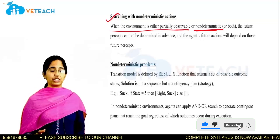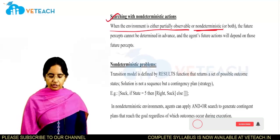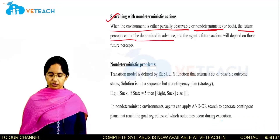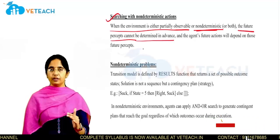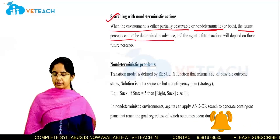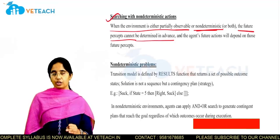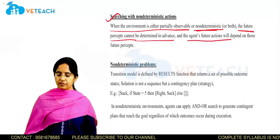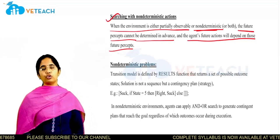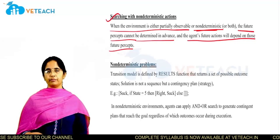Non-deterministic means we don't know what is happening — the next action to be taken is not known in advance. So the future percepts cannot be determined. If your robot has a partially observable environment and the actions are non-deterministic, then the agent's future actions will depend upon future percepts.